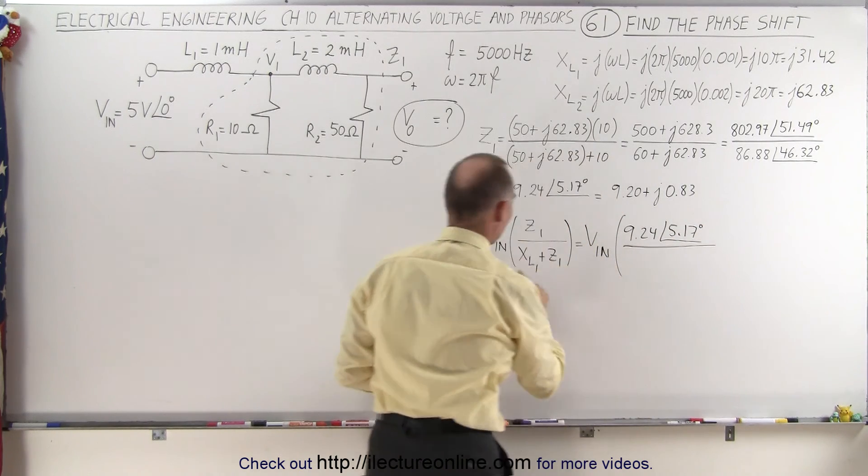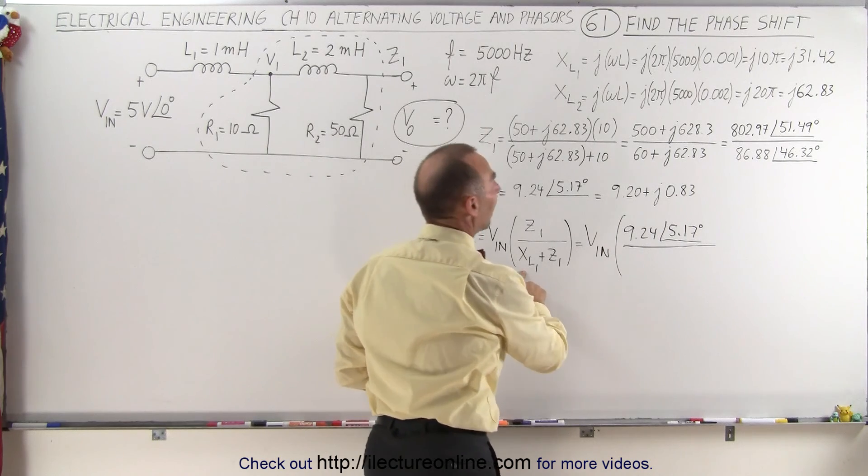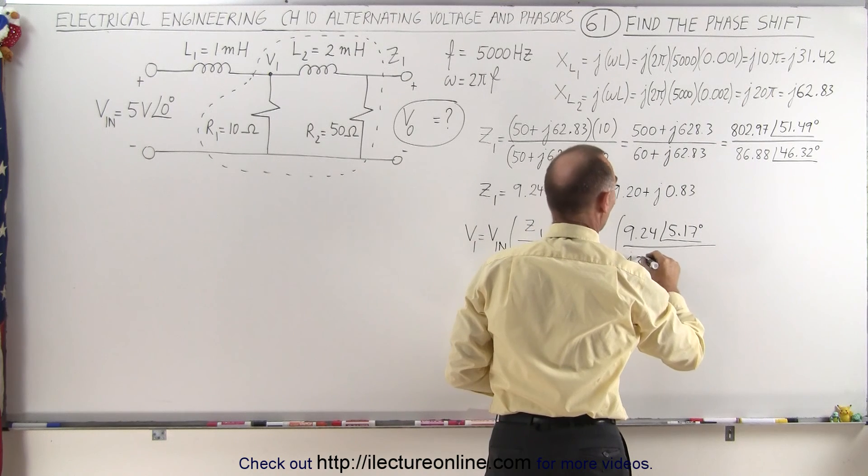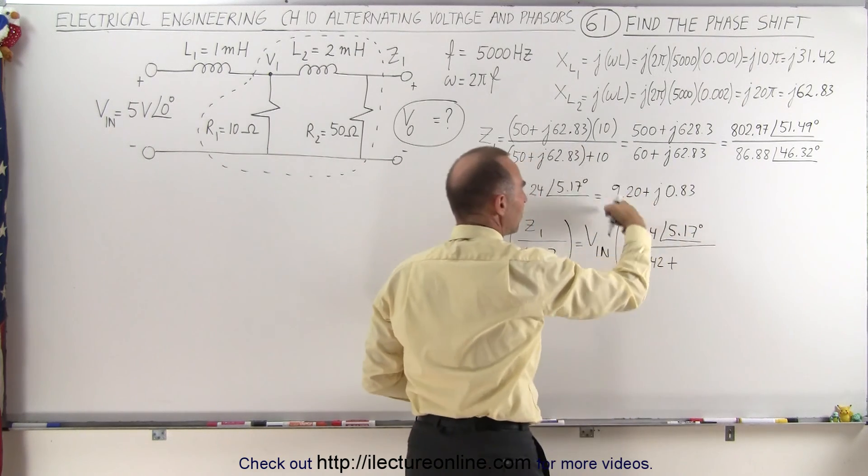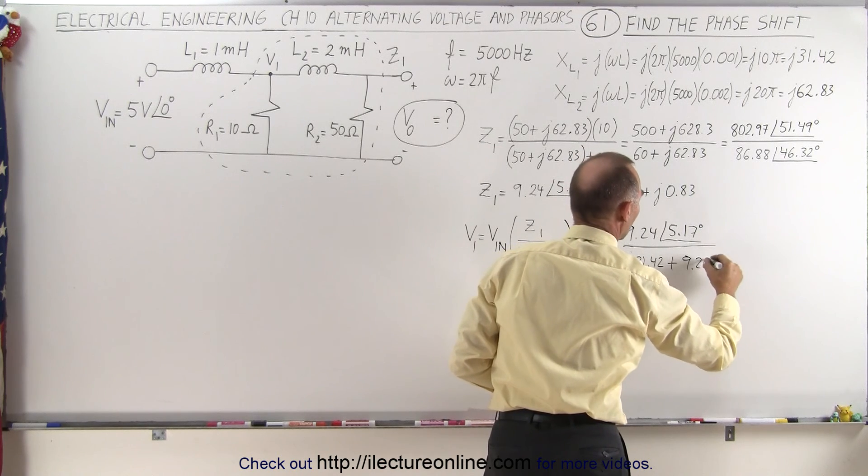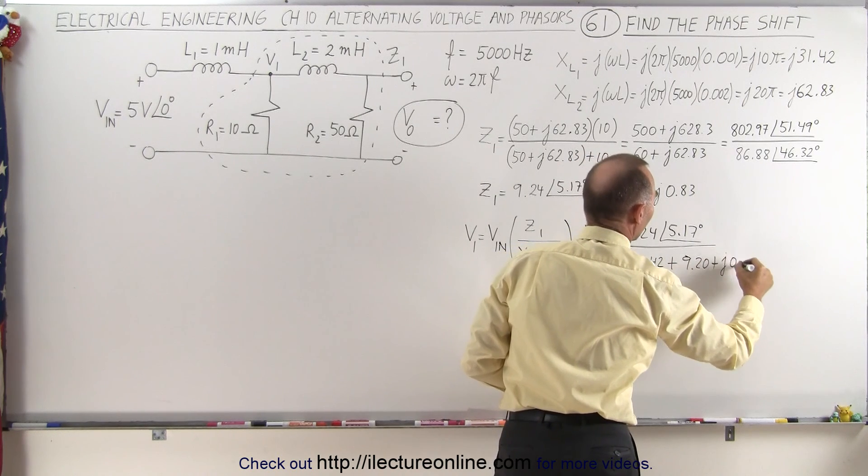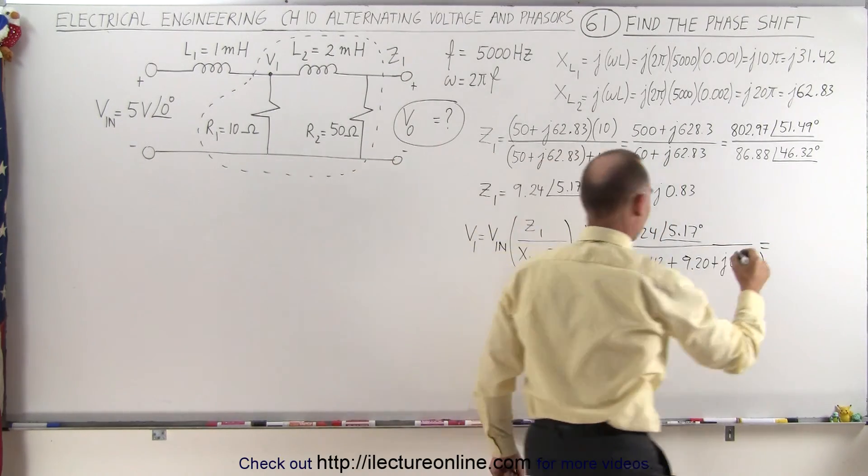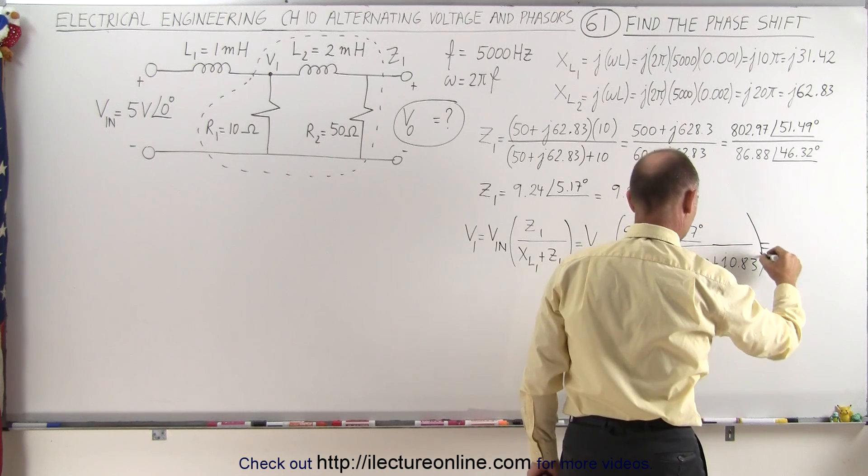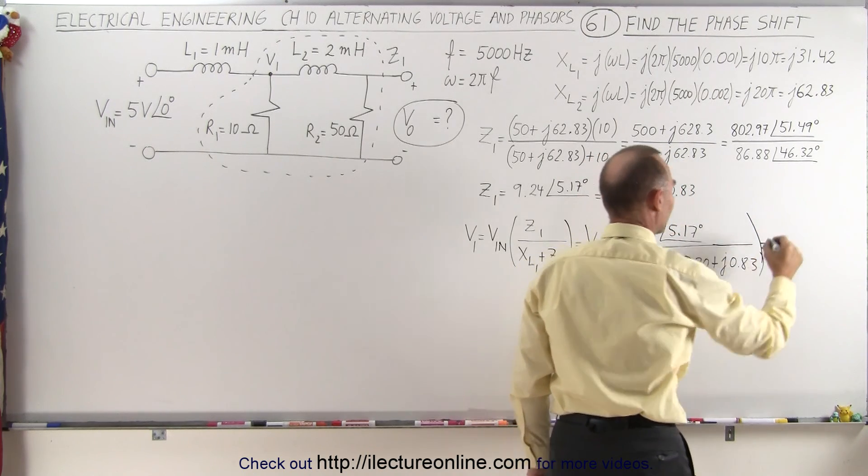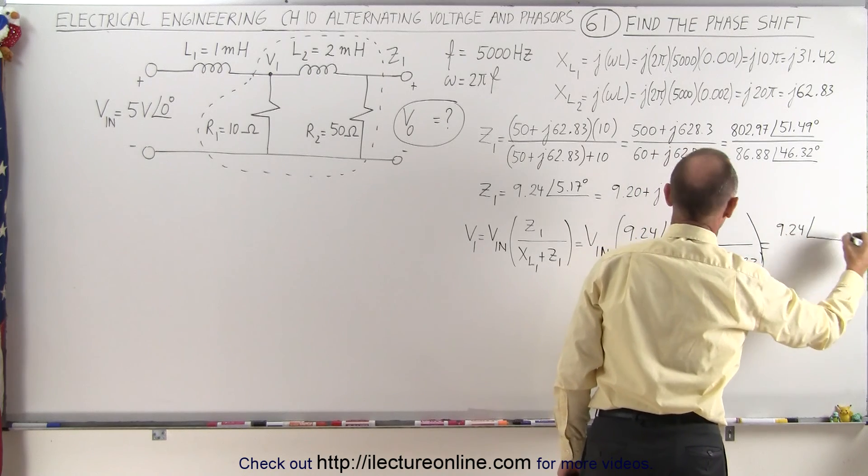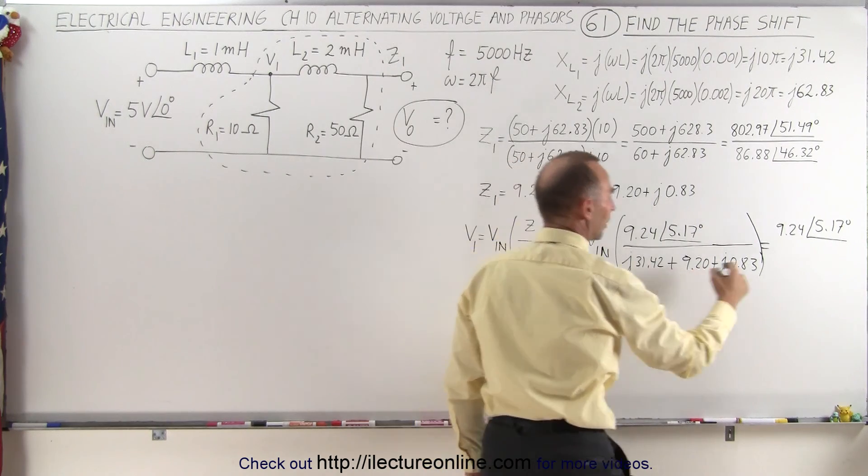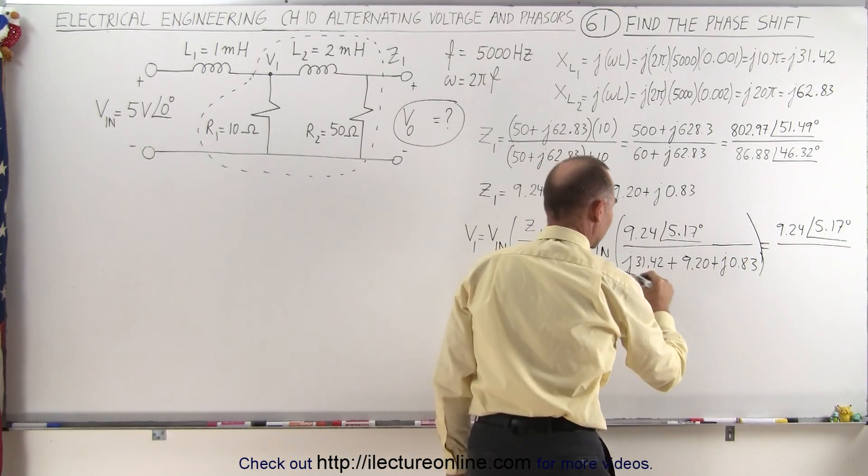In the denominator we're going to add the two together. We have XL1, that would be j31.42 plus the impedance in this format which is 9.20 + j0.83. Summing that up we get the following. In the numerator we have 9.24 with a phase angle of 5.17 degrees. In the denominator, I'm going to add these together.